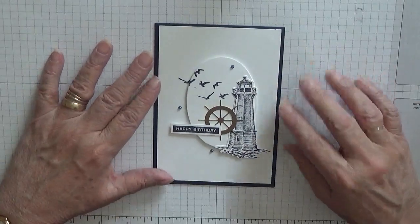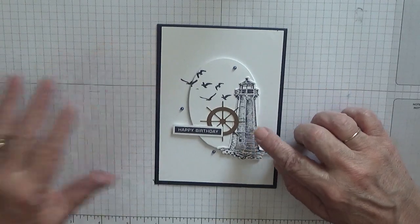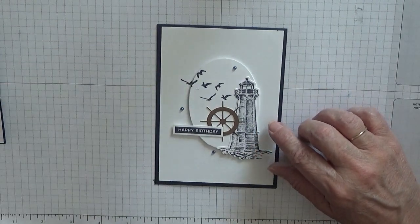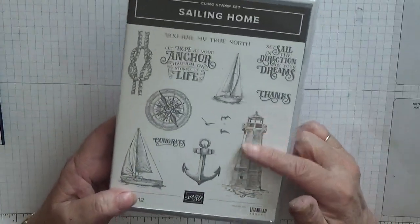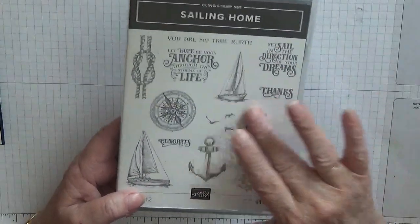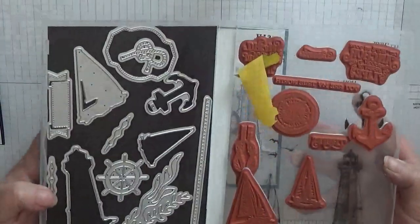Hello, Georgia Burns here. Today I'd like to show you how I made this male birthday card using the stamp set Sailing Home. In it I've used the lighthouse and the birds, but I've also used the dies for the lighthouse and the steering wheel, which I've already cut out.